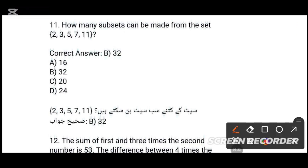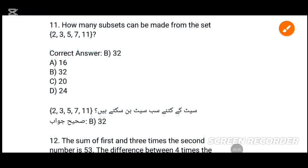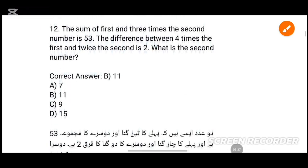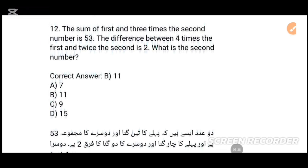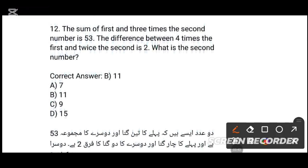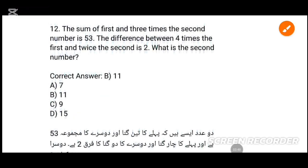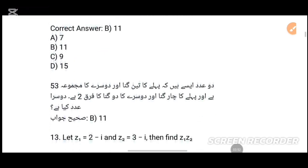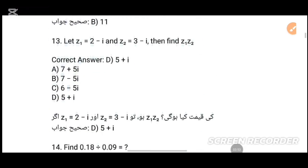MCQs number 12: The sum of first and three times the second number is 53. Option B is the answer. MCQs number 13: The answer — come on, option tick — you have 15, the answer is Celtic — option mentioned, parents key.